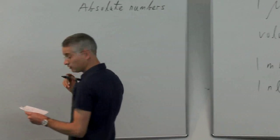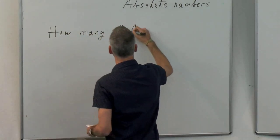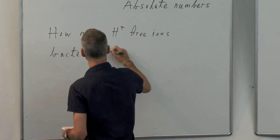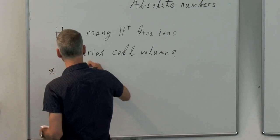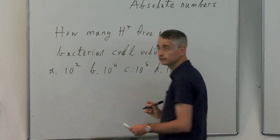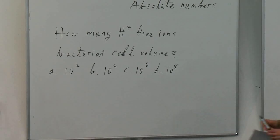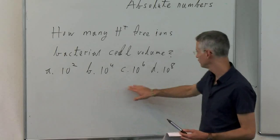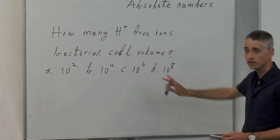You might remember from last time, we had the following question: how many H+ free ions will be in the bacterial cell volume? The options were 10 to the 2, 10 to the 4, 10 to the 6, or 10 to the 8. We'll be talking about that today. Who feels it's 10 to the 2? One. 10 to the 4? Five people. 10 to the 6? The majority. 10 to the 8? A few more.